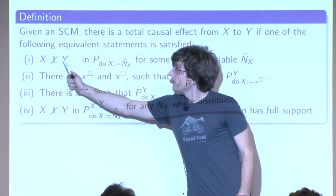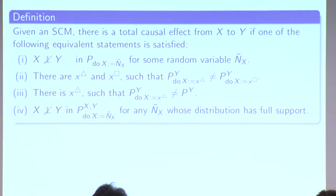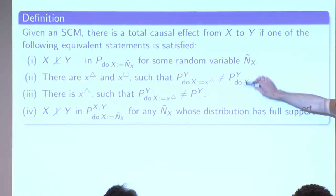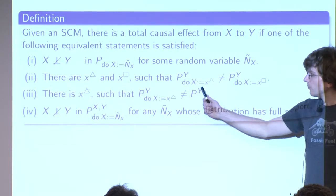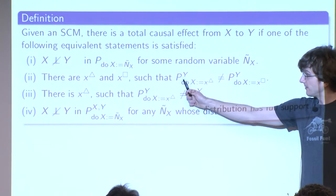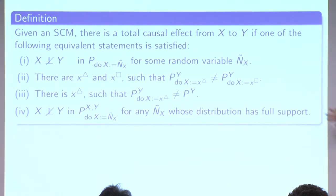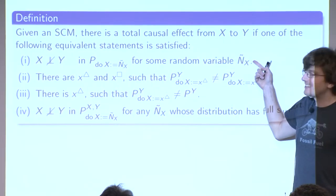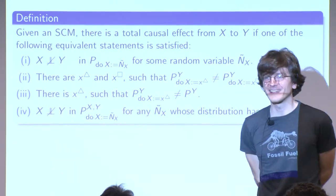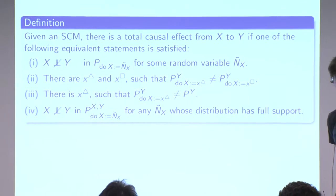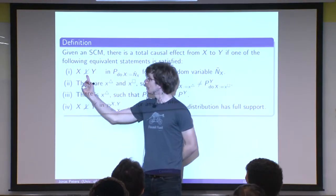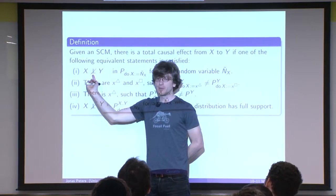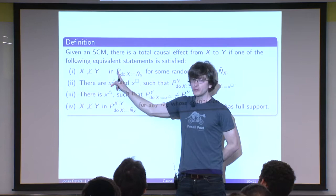You randomize x and see that x and y depend on each other. There are many equivalent notions - for example, there exist two values you can set x to, say 3 and 7, such that the distribution of y changes. A student asks about the notation: when the independence symbol is not crossed out, it means statistically independent; when crossed out, it means statistically dependent. Another student asks: how does this differ from simply saying if you change x, you change y? It doesn't differ at all - it makes it formal.